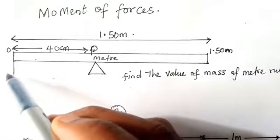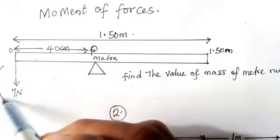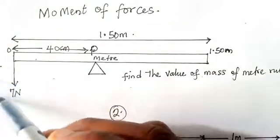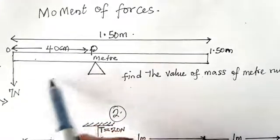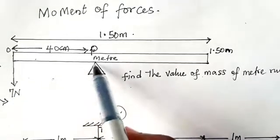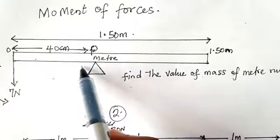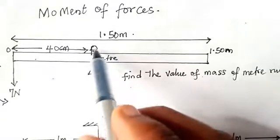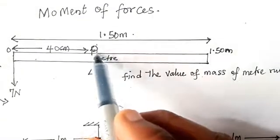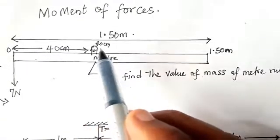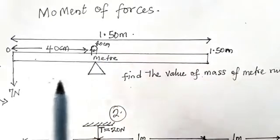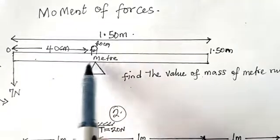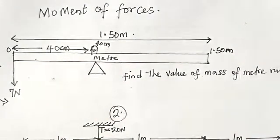When you carry this weight of 7 Newton and put it at the zero mark, the meter rule tends to fall in this direction. You then use this knife edge to keep balancing — you keep on adjusting this knife edge until it is found to balance at 40 centimeters. That is why we have from this place to the balance point as 40 centimeter.